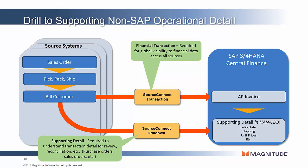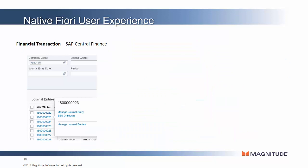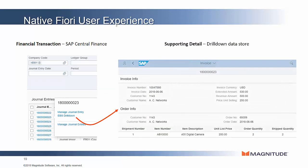This allows the supporting detail from all transaction types across all source ERPs to be located in a central repository. On top of this common data store, SourceConnect Drilldown includes a Fiori application that enables a user to natively drill down from a document in the Universal Journal to the supporting detail, as you can see on the screen. SourceConnect Drilldown is valuable in account analysis, reconciliation, and period close scenarios where you want to understand more detail beyond the Universal Journal entry. This is very difficult to do for non-SAP data sources, and SourceConnect Drilldown makes this an easy native experience.